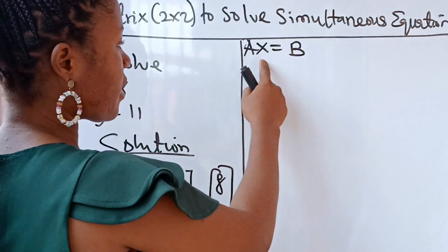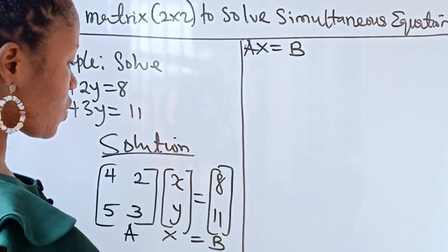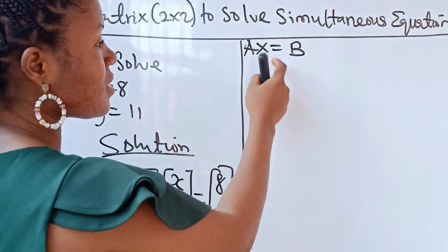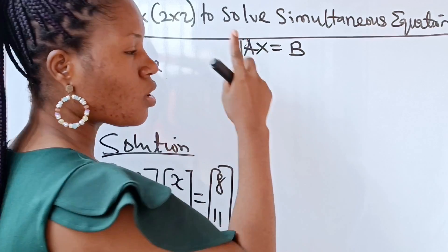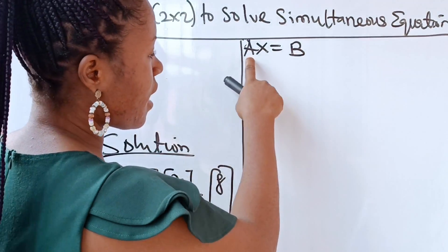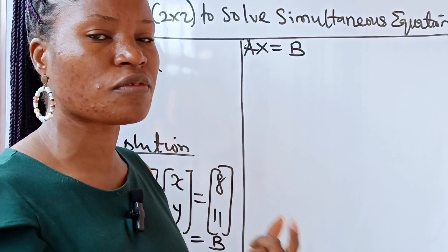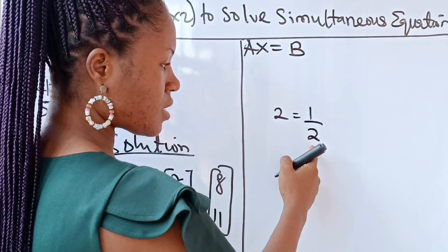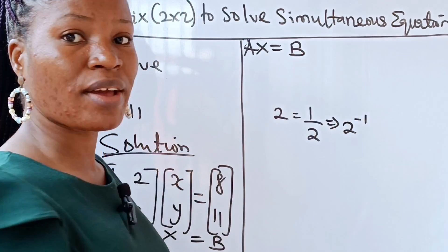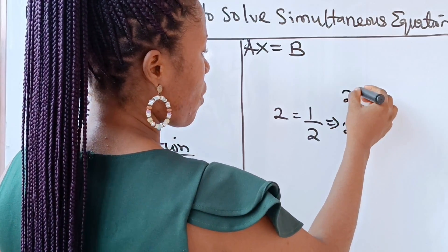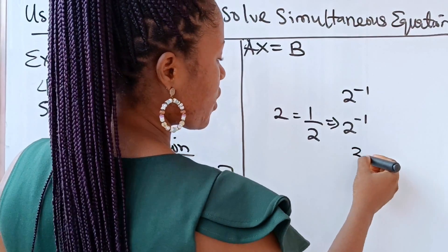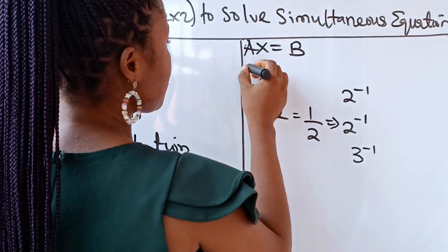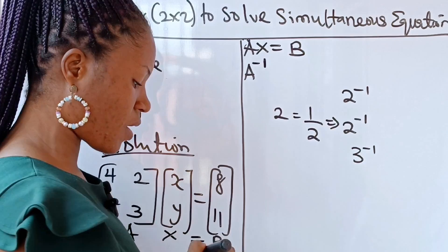We are looking for X and Y, which means we want X on its own — we want to make X the subject of the formula. We need to remove A. You know that the inverse of a number — for example, the inverse of 2 is 1 over 2, which can be written as 2 raised to the power of minus one. Similarly, the inverse of A is A raised to the power of minus one.